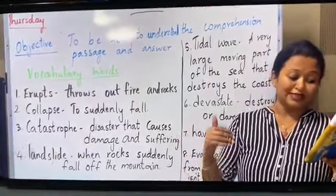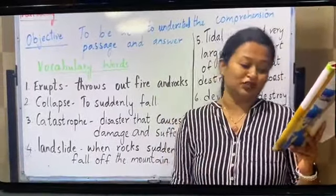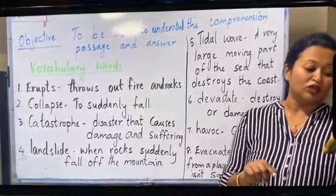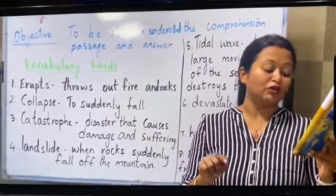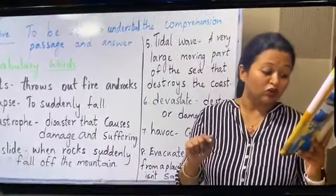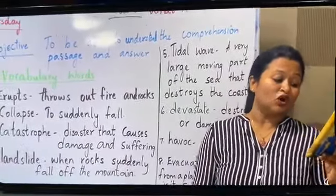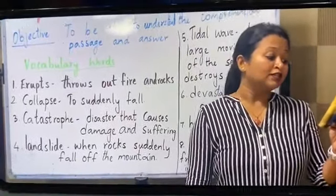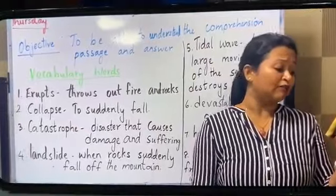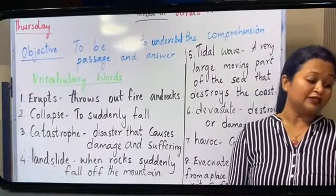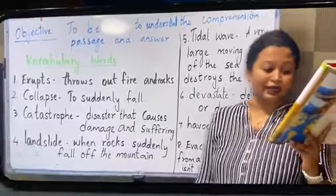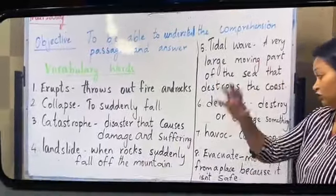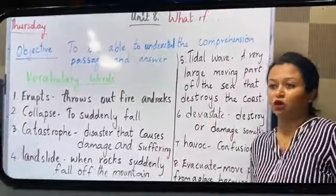Now we are going to the second paragraph, which tells us how it would happen. The volcano is by the sea and the water next to the volcano is about 6 kilometers deep. If the volcano collapsed, a landslide of 500 billion tons of rock would fall into the sea. This would create a huge tsunami about 100 meters high. A landslide is when the rocks suddenly fall off the mountain.